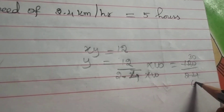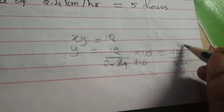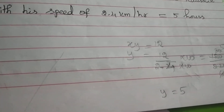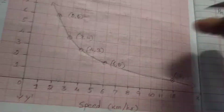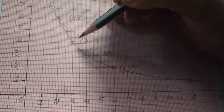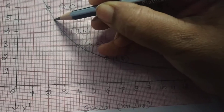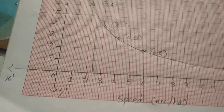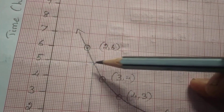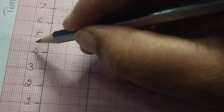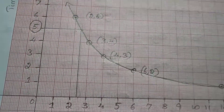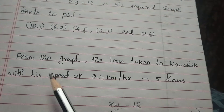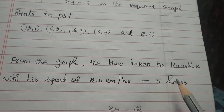From the curve, when x equals 2.4, the y value is 5. So the answer is: from the graph, the time taken by Kaushik with his speed of 2.4 km per hour is equal to 5 hours.